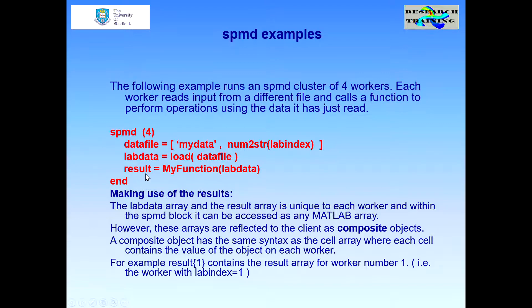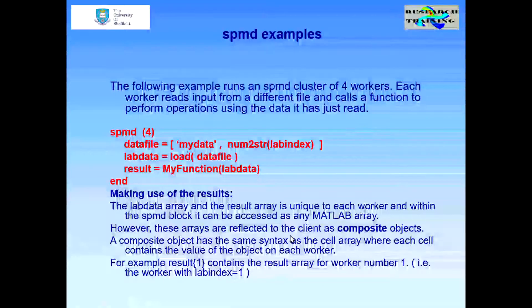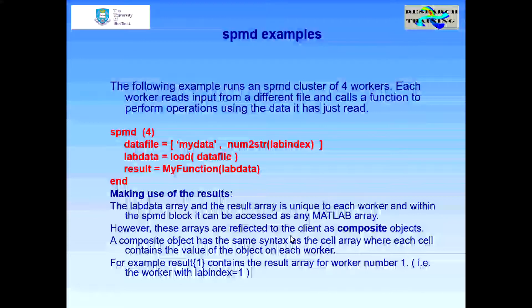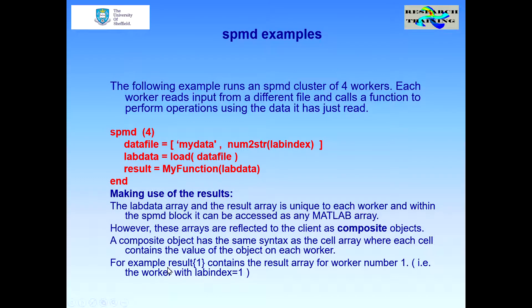The result variable, because it contains different values on different workers, is called a composite object — it is composed of different values from the different workers. If we wanted to access the results from worker number one, we would say results inside curly brackets one. If we wanted to access the fourth worker's results, we would use results inside curly brackets four.